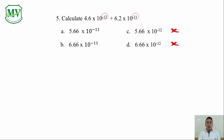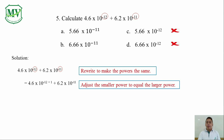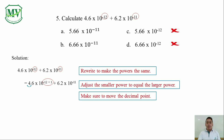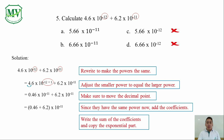We can be 100% sure once we do the solution. Start by changing the exponential parts, and add positive 1 to negative 12 to make it negative 11. Then move the decimal point one place to the left. Next, add the coefficients. Lastly, write the sum and copy the exponential part. That's 6.66 x 10 raised to the power of negative 11. That's letter B.